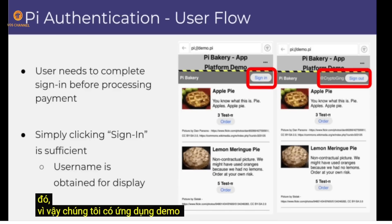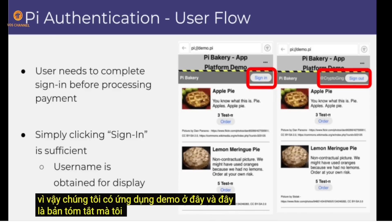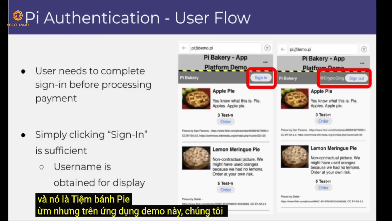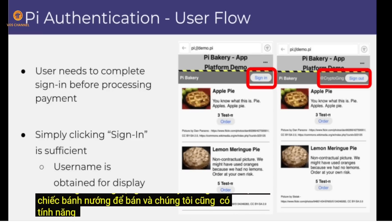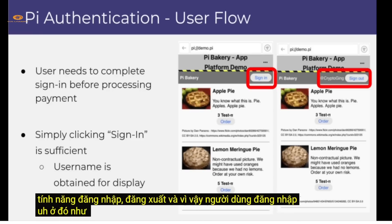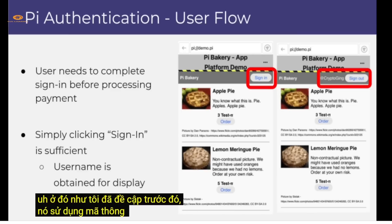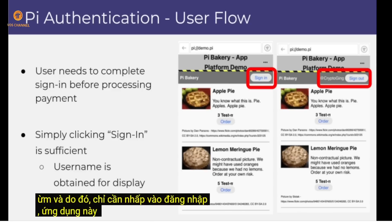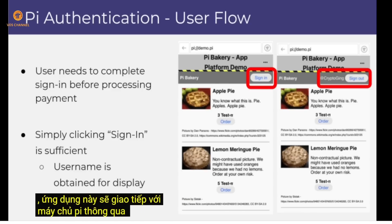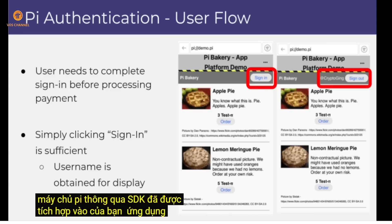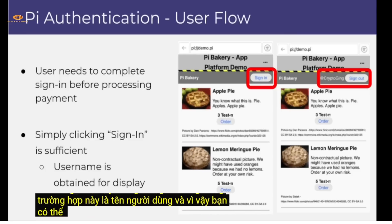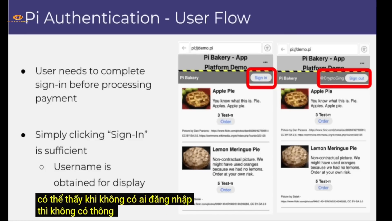Here we have our demo app — the boilerplate I was talking about — it's a Pi Bakery. On this demo app we have a few pies for sale and a sign-in/sign-out feature. The user sign-in utilizes an access token, so by simply clicking sign-in, the application communicates with the Pi servers via the integrated SDK and obtains the user information — in this case the username — which then appears on the right once signed in.